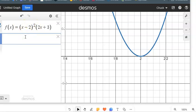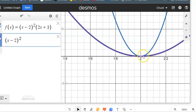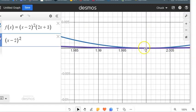It starts to look a lot like x minus two squared, and it doesn't match it exactly. But the closer you get to it, the more it's going to look like it.